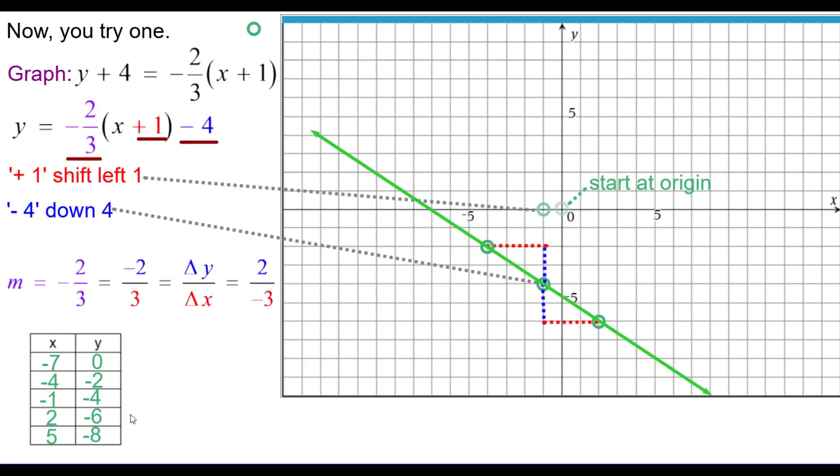And so I guess we showed a little bit more than that here, showing how we shifted, started at the origin, shifted left 1, down 4, and then drew a line of slope of negative 2 over positive 3 or positive 2 over negative 3. Or you could have done a table. And these are 5 points that are on this line.